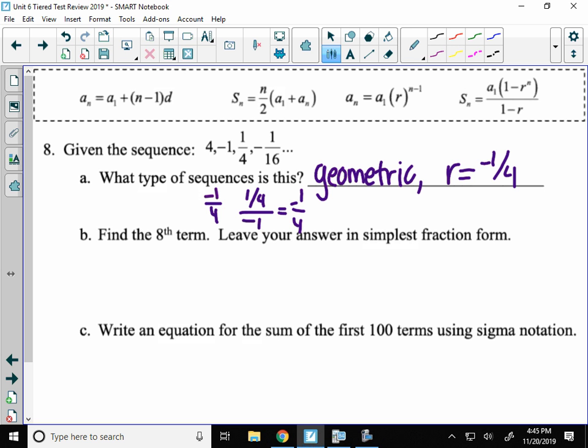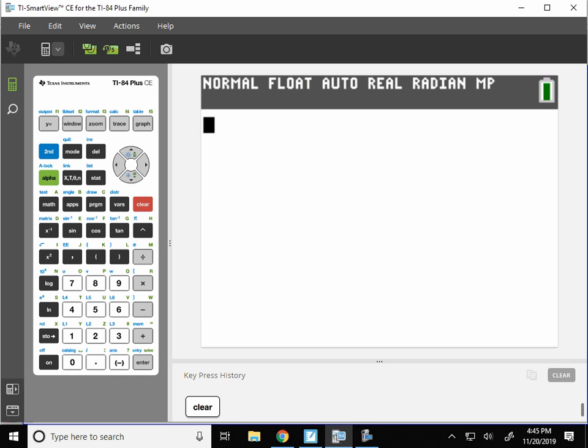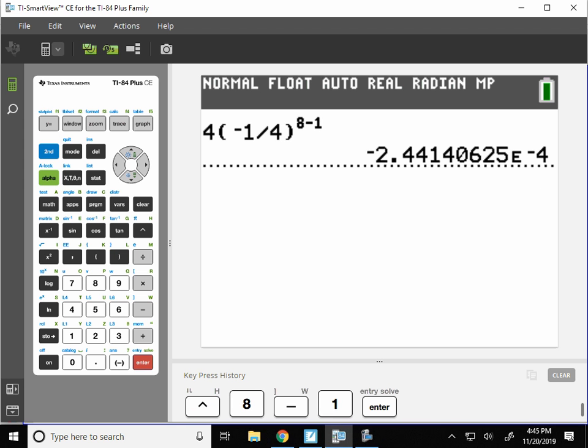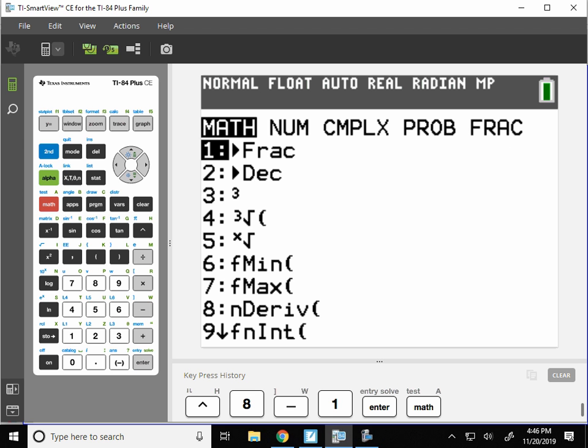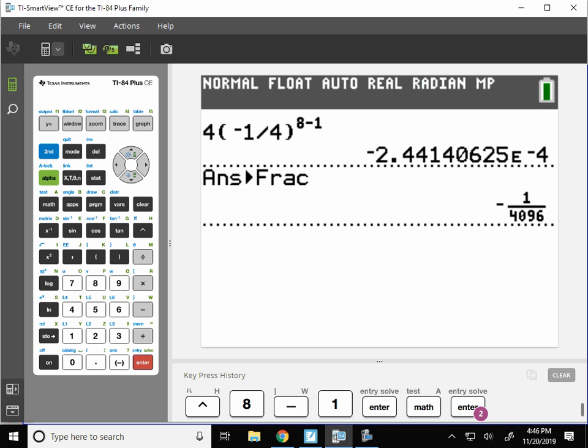Find the 8th term of the sequence. So just leave it as a fraction. So if I'm doing a geometric sequence here, I'm going to use this equation. So I'm going to have a_8. So I need the first term of my sequence, which is 4, times my common ratio. And the exponent is n minus 1. So I'm going to type that into my calculator. So 4 times negative 1 fourth, or negative 0.25, works to the 8 minus 1 power. Now, that's a really lucky number. It has an E that's scientific notation. Simplest fraction form. Remember, you go math, enter, enter. So you get that fraction. And there's your answer.